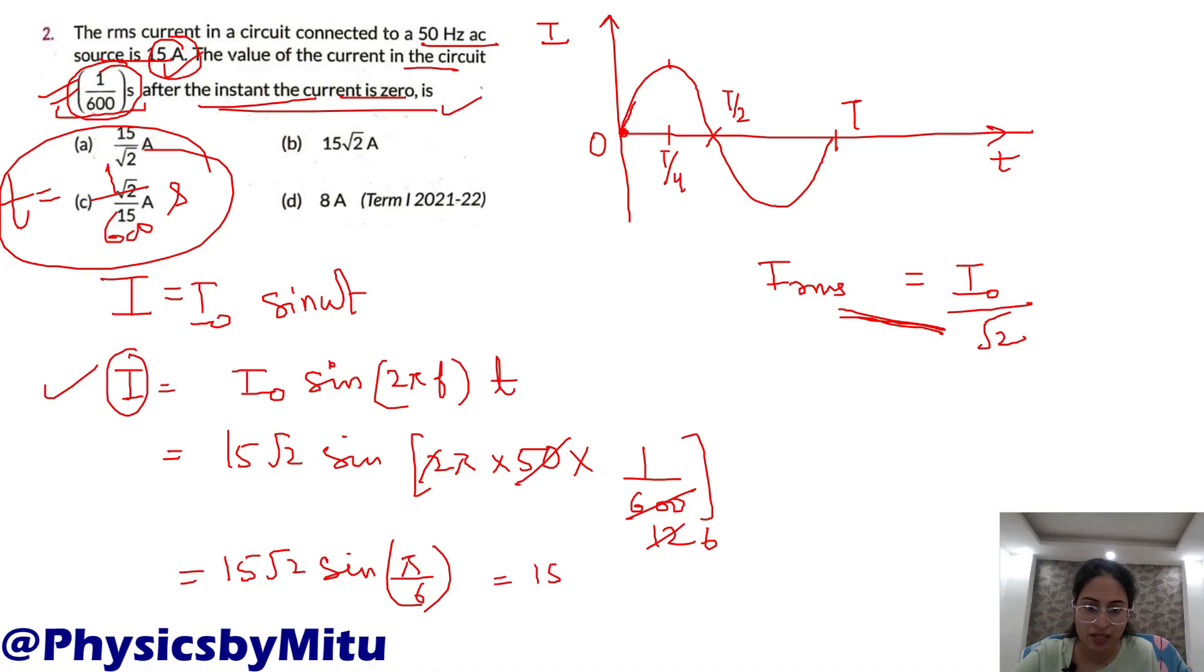Which is 1/2. So 15 root 2 times 1/2, answer is 15 upon root 2 ampere. This is your answer.